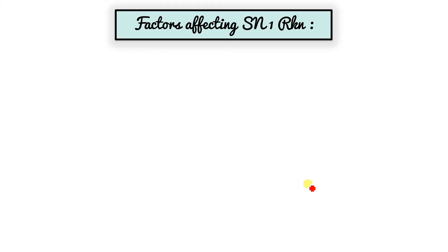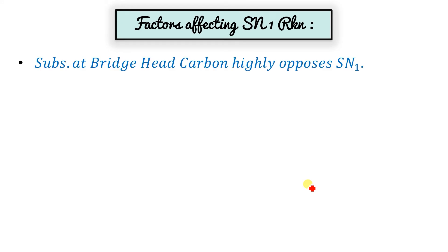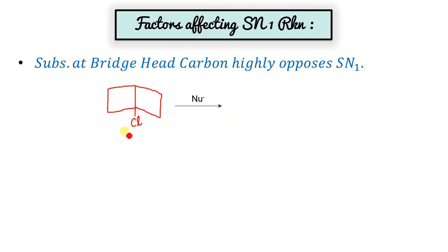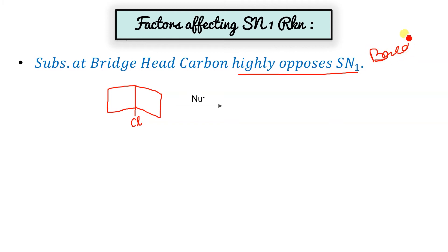More factors affecting SN1: substitution at the bridgehead carbon highly opposes SN1. According to Bredt's rule, a positive charge or sp2 hybridization at the bridgehead carbon is not a stable condition, so carbocation formation does not occur there. Hence it is highly opposed.